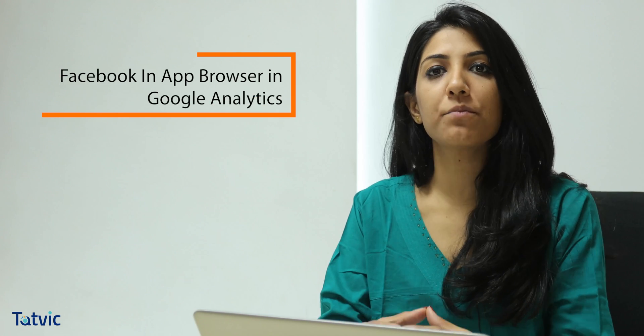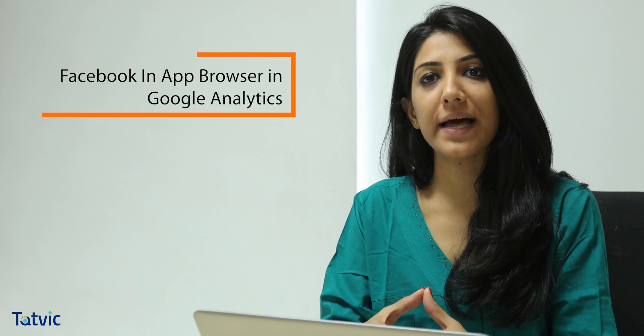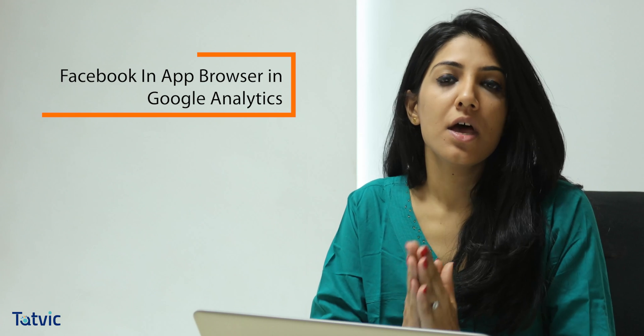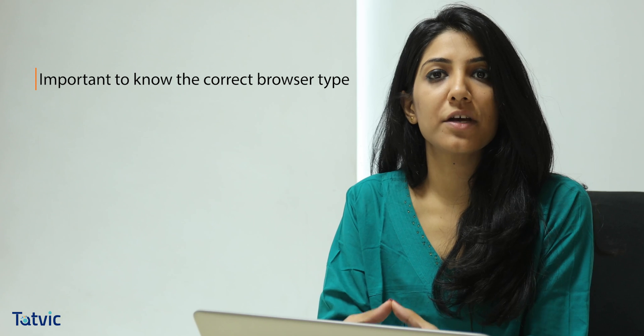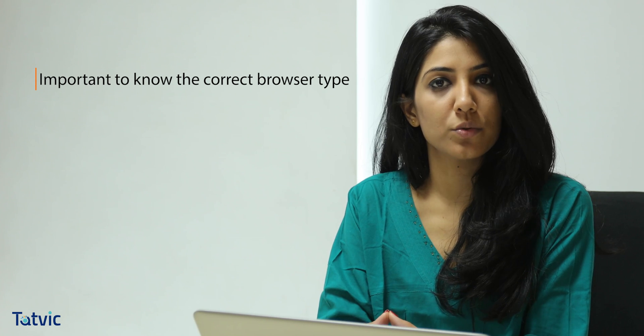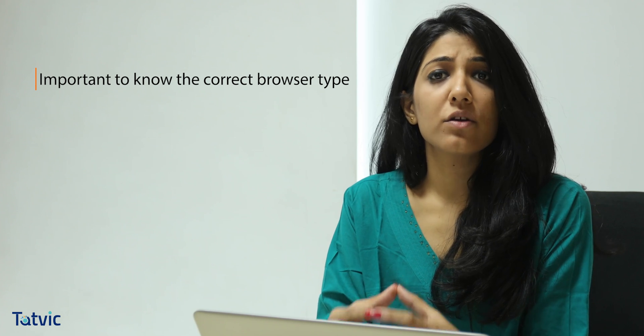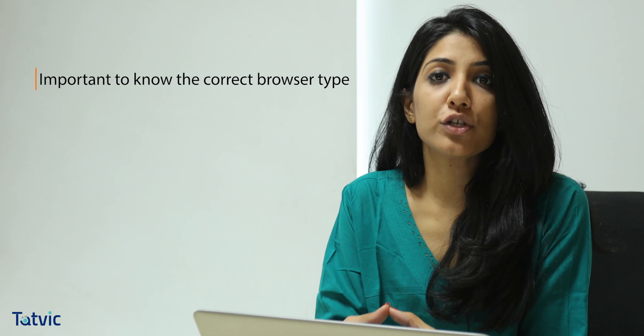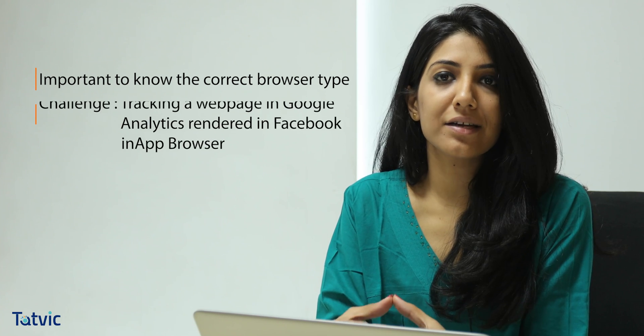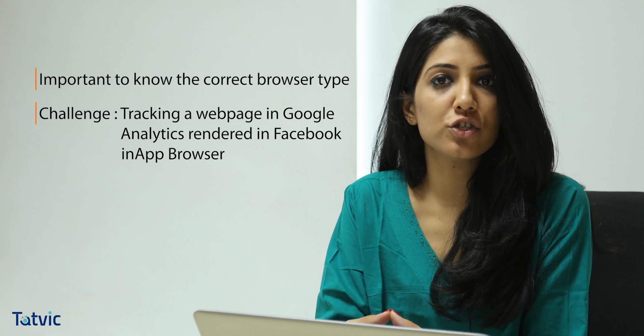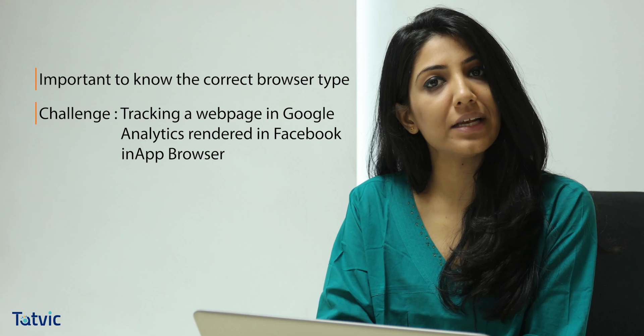Hello, I am back with this week's quick hacks. Today we are going to talk about tracking the Facebook in-app browser in Google Analytics in just three steps. It is very important from a user behavior point of view to know the correct browser type that our user is currently browsing through. The problem statement we are going to tackle is the challenge of tracking a web page in Google Analytics that is rendered in the Facebook in-app browser.